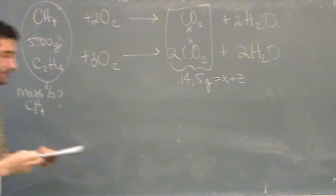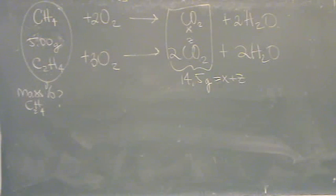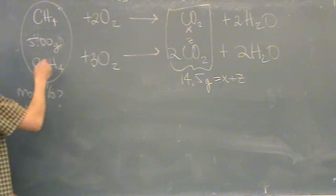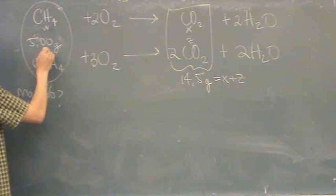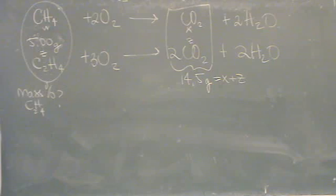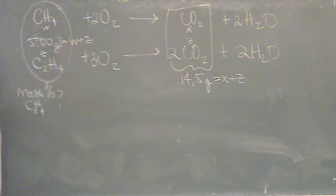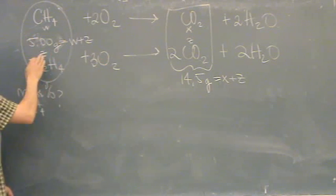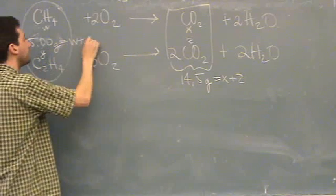And then the same for this. If this is W grams of methane and z grams of ethylene, then 5 equals W plus Z. I'm just picking whatever letters you like to write down. It doesn't matter. Just so you can get an idea. Oh, I shouldn't use Z, because I use Z over there. W plus Y. Let's use a Y.